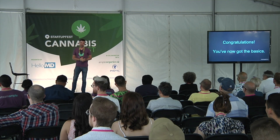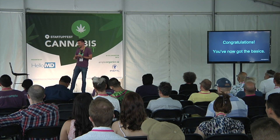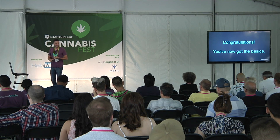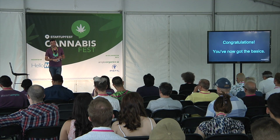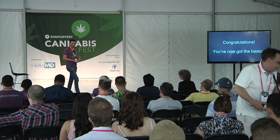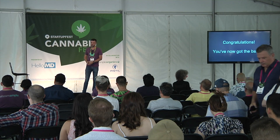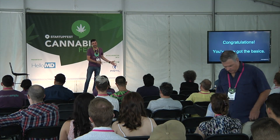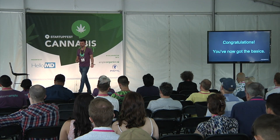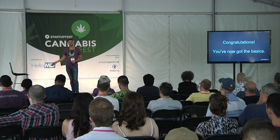So congratulations — you've now got the basics. You understand how cannabis is grown, you understand the difference between an indica, a sativa, and a ruderalis, you know what a terpene profile is, and you know how licensed producers make money — whether that's growing cannabis or actually extracting cannabis and making infused products like vape pens, pre-rolls, brownies, cookies, and all that fun stuff.